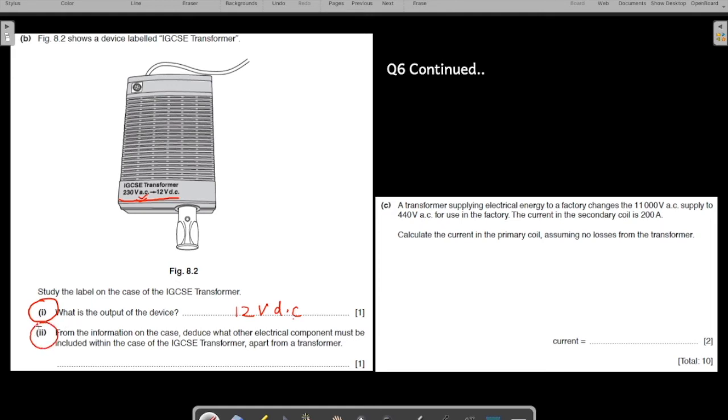Now let us come to the next part. From the information on the case, deduce what other electrical component must be included within the case of the IGCSE transformer apart from the transformer. Because the AC is changing into DC, what other component would be there inside this transformer box? AC is converted to DC by what device? We have been doing it again and again. Diode.